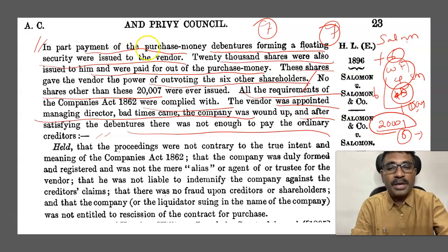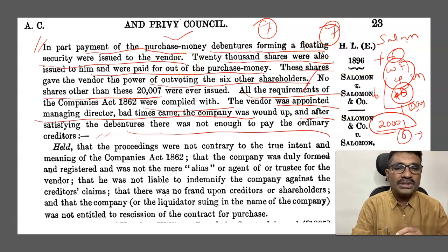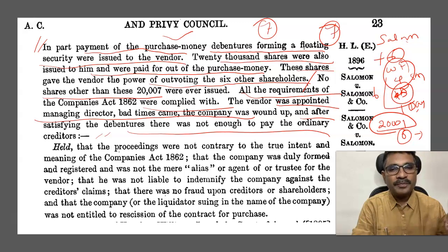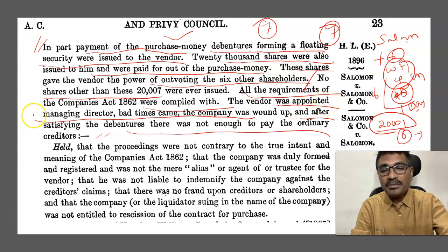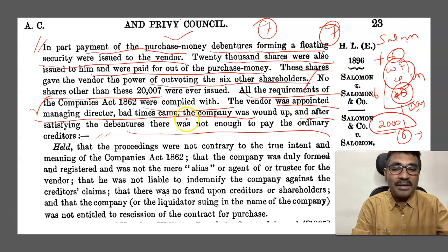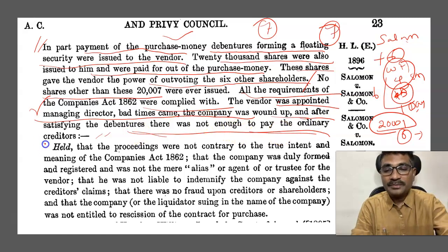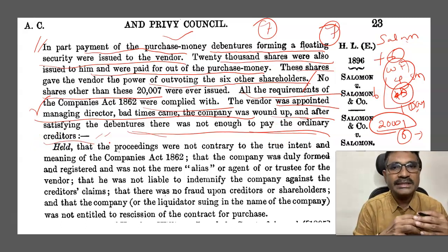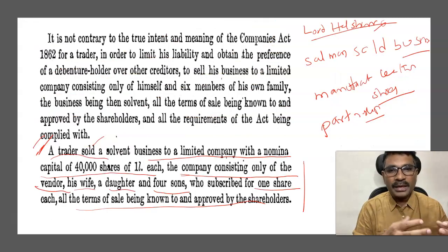In part payment of the purchase money, debentures forming a floating security were issued to the vendor, and twenty thousand shares were issued for the purchase money. So there are two issues. Number one, Mr. Solomon is the founding director and founding member of the company. He is also the vendor and became the managing director. Bad times came, the company had to be wound up, and after satisfying the debentures there was not enough to pay the ordinary creditors. The dispute was whether the company was really existing in a meaningful sense.